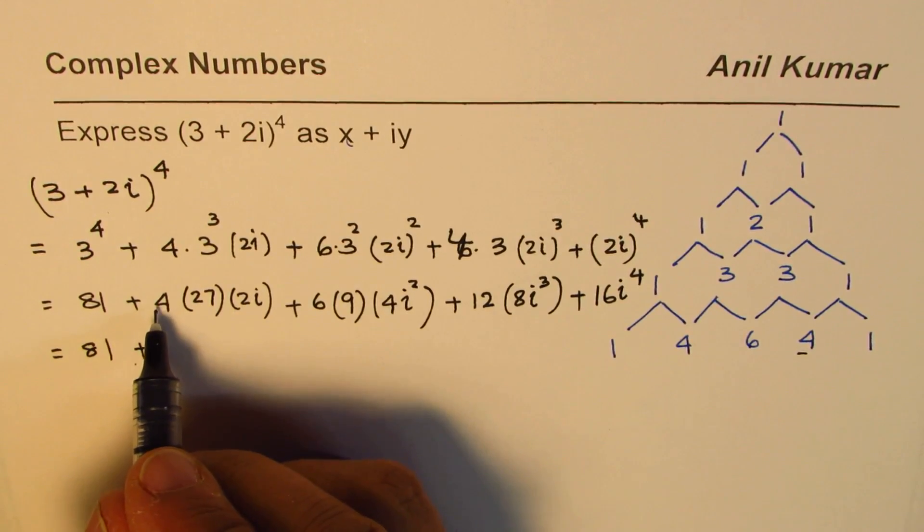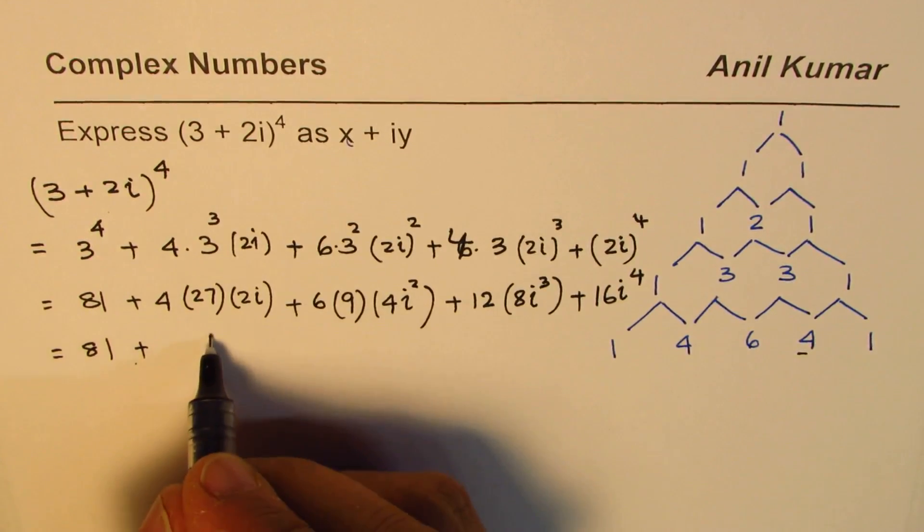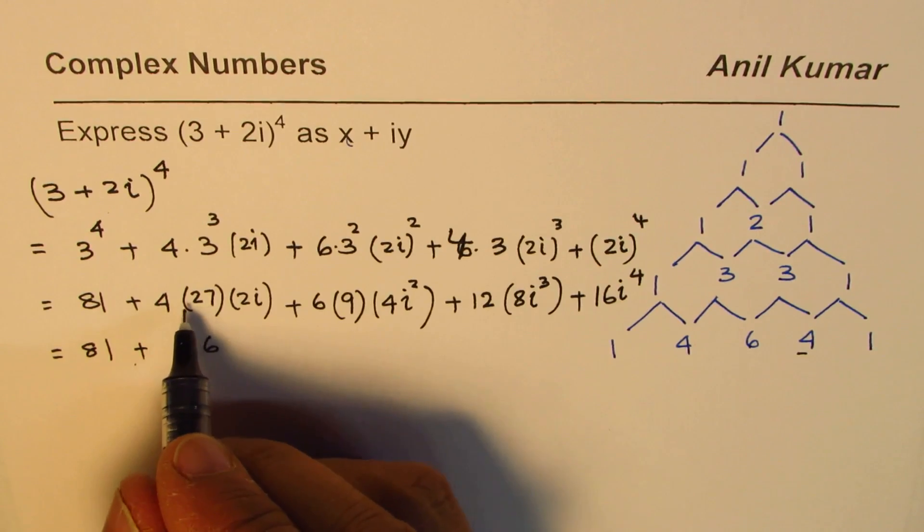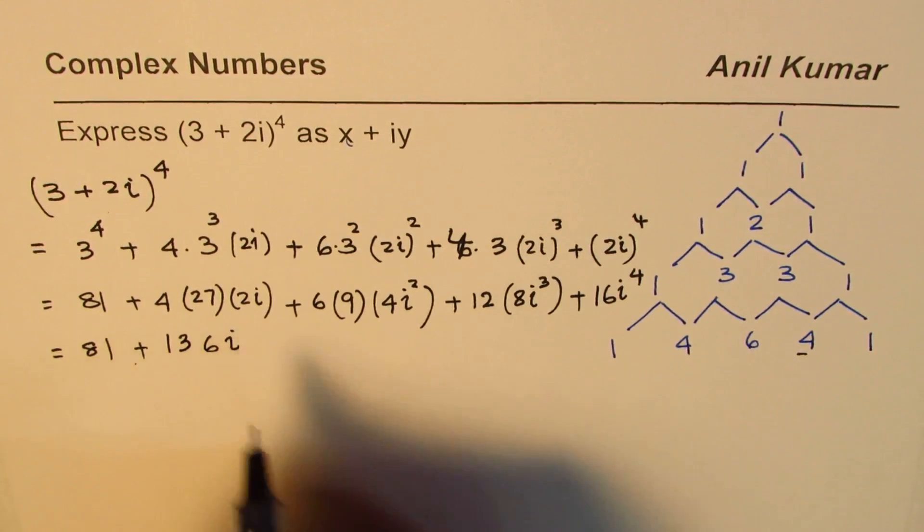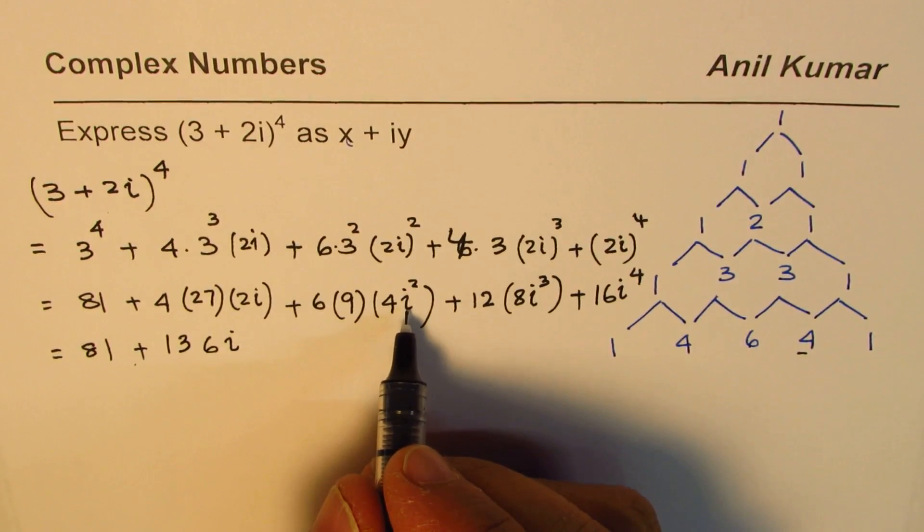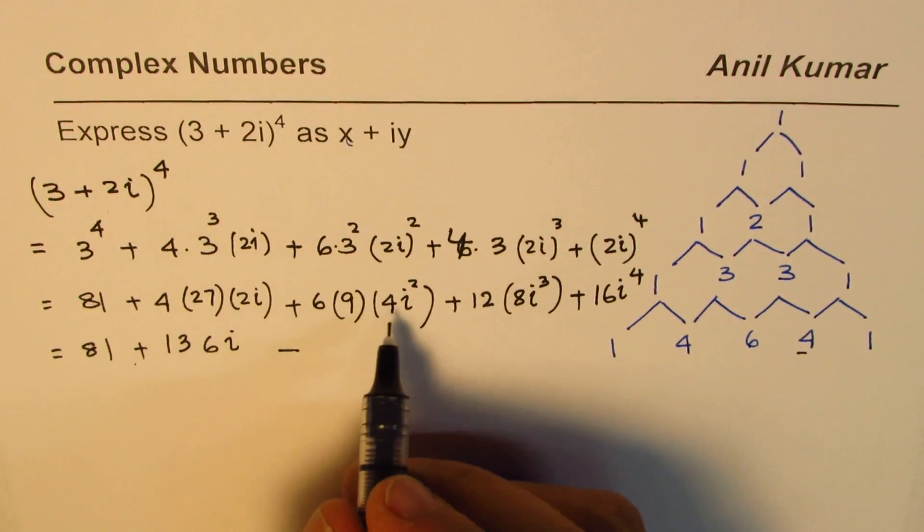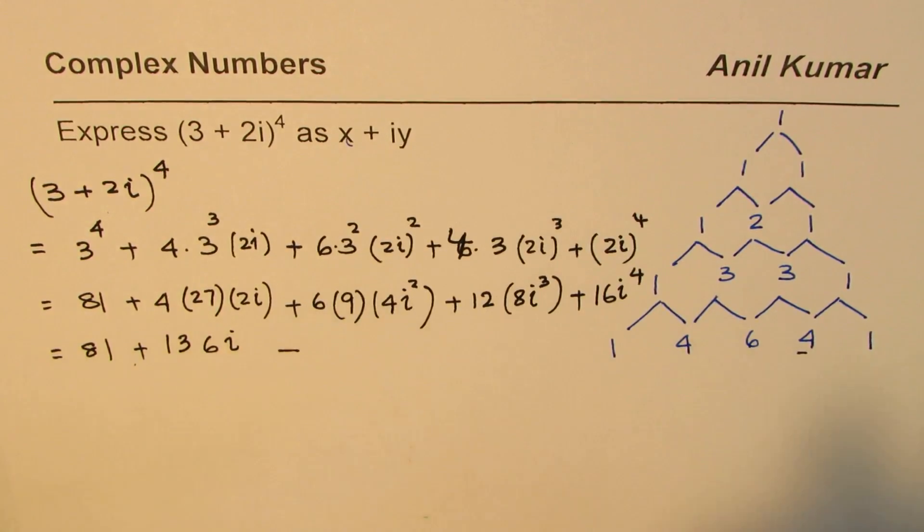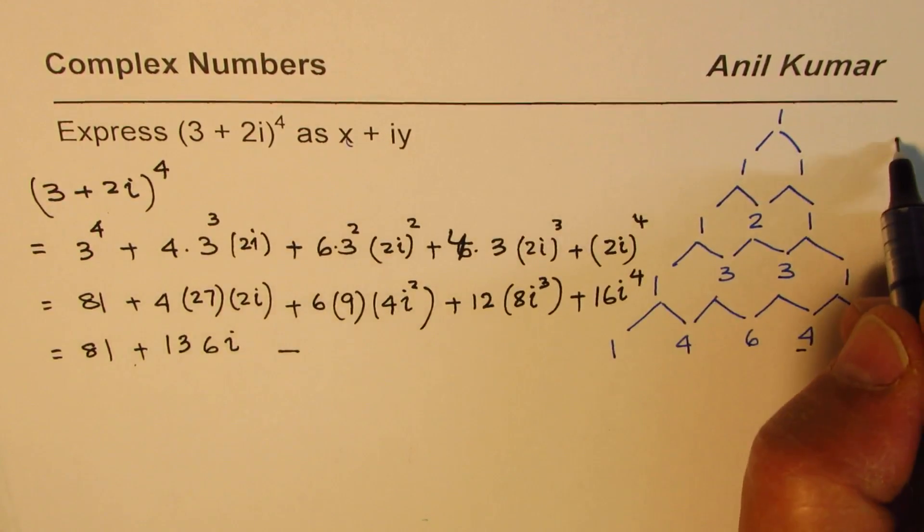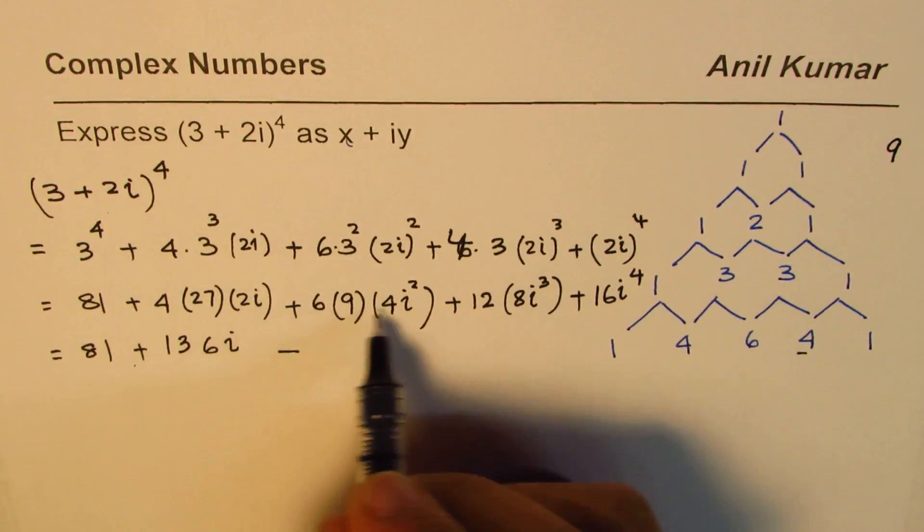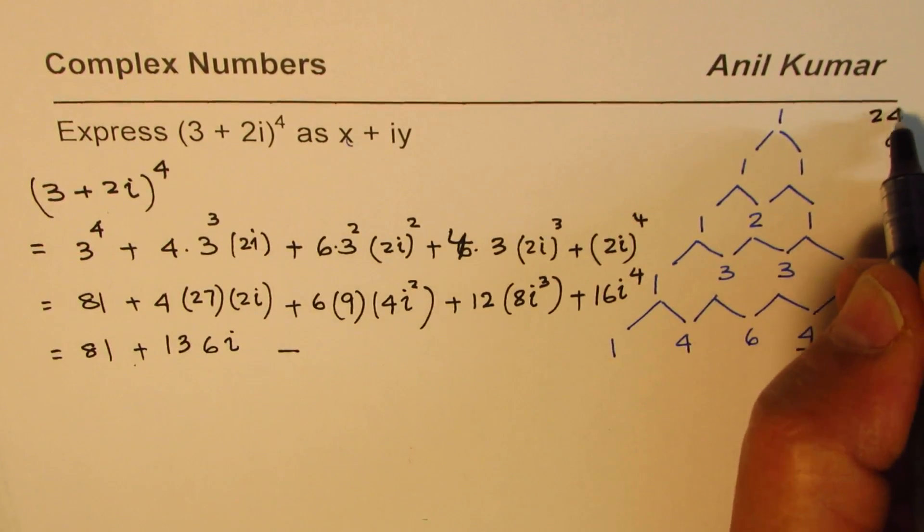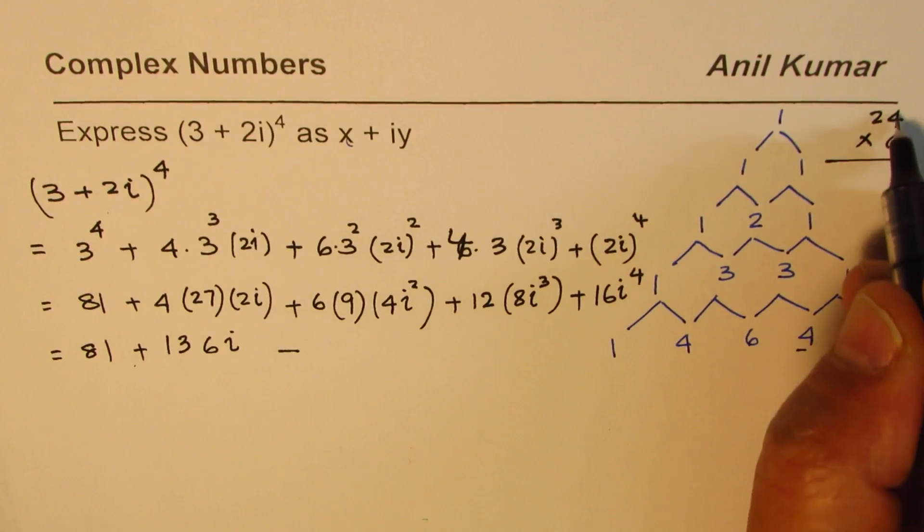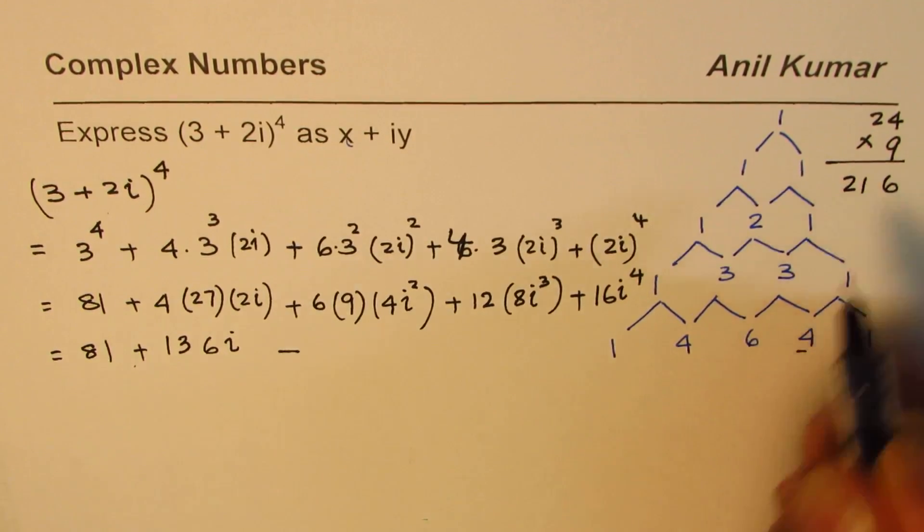4 times 2 is 8, 8 times 27 is 216 - so 8 times 7 is 56, 8 times 2 is 16 - gives us 216i. i square is minus 1 so we get minus here, and then we can have 6 times 9, so 6 times 4 is 24, multiply that by 9: 9 times 4 is 36, 9 times 2 is 18, so 216.